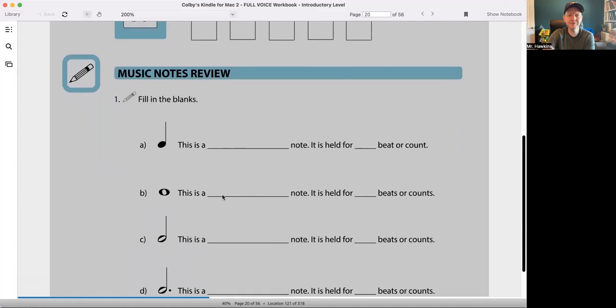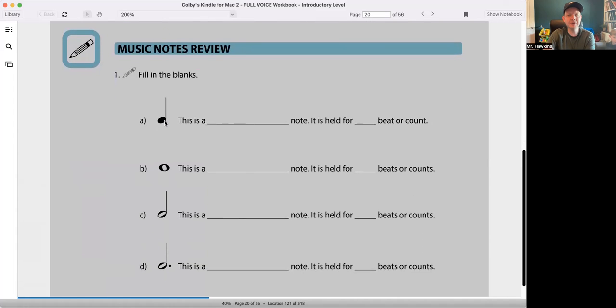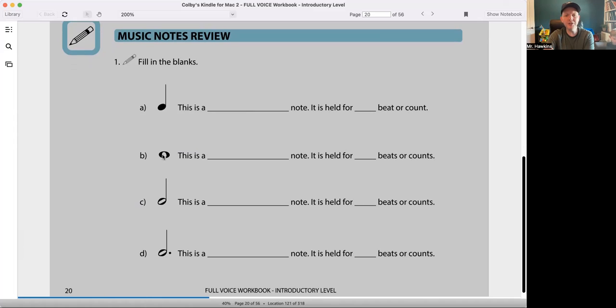You can write anything. Fill in the blanks. Solid with a tail or stem is a quarter note and it lasts for one beat or count. Hollow, no stem, no tail is a whole note and it's held for four beats usually or the entire measure.